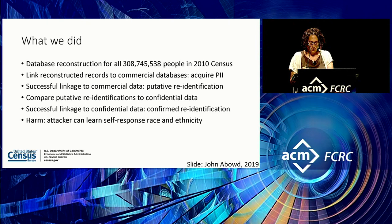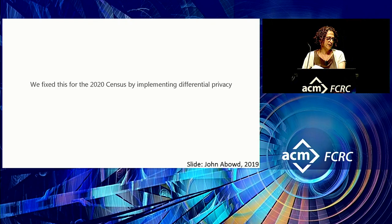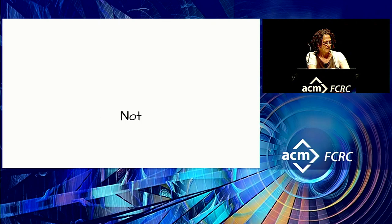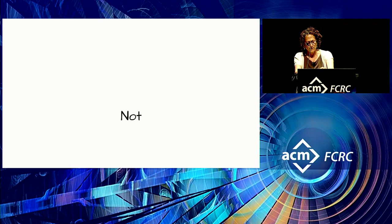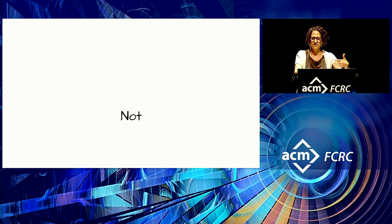Abowd says: we fixed this for the 2020 census by implementing differential privacy. How was this greeted? Not with jubilation. Some complaints: 'The old privacy protections worked well enough' — but the census did this reconstruction. Another complaint: 'The law doesn't care what you learn about people, only whether you can match a record to a name.' Another: 'We've heard a lot about the privacy budget, but what about a utility budget?'